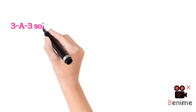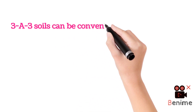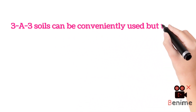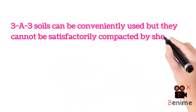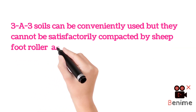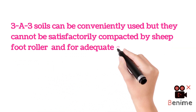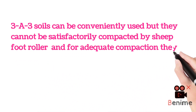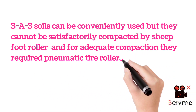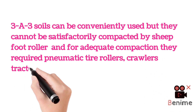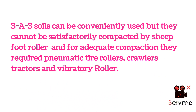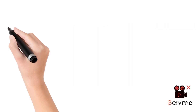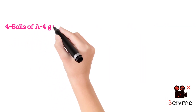Point 3: A3 soils can be conveniently used, but they cannot be satisfactorily compacted by sheepfoot roller. For adequate compaction, they require pneumatic tire rollers, crawlers, tractors, and vibratory rollers.